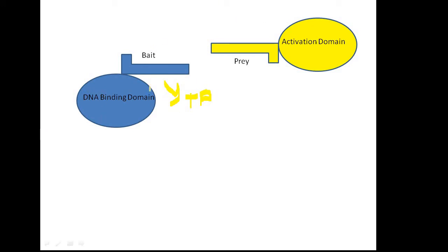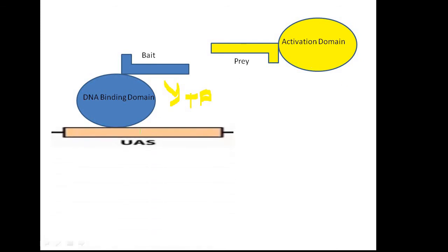As mentioned earlier, the DNA binding domain and activation domain will only activate transcription when they are in close proximity. So if these two proteins — bait and prey — are interacting with each other, these two domains will come close to each other, and only then will transcription be activated.